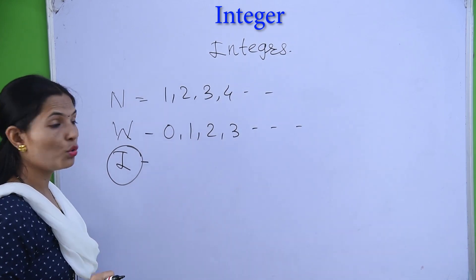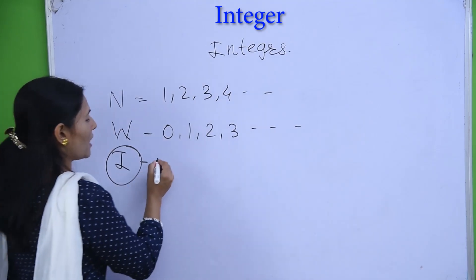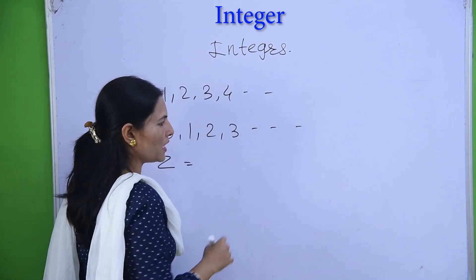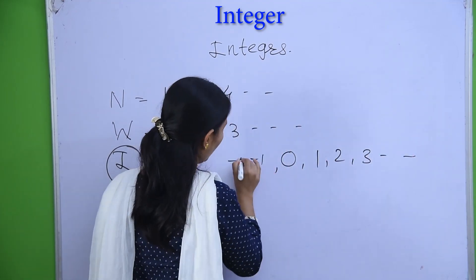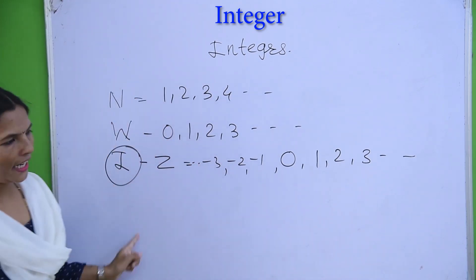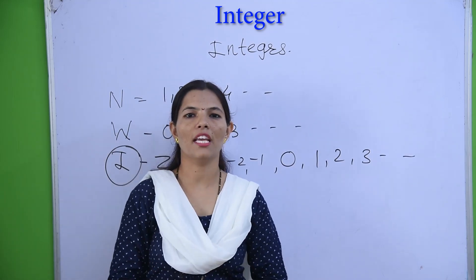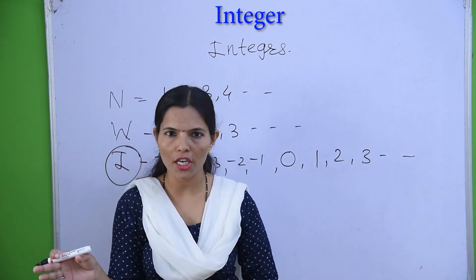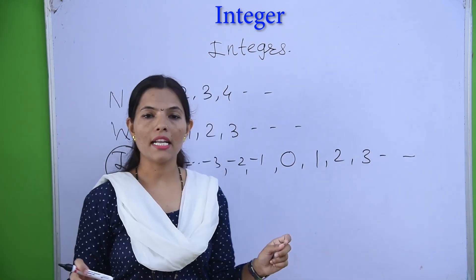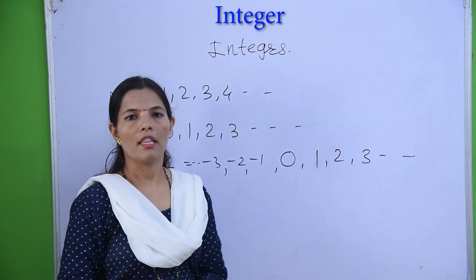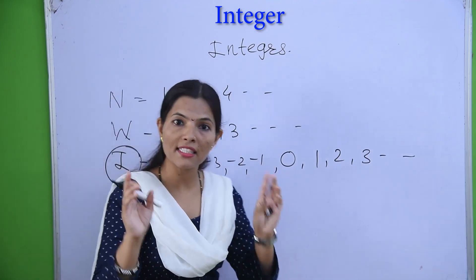And then integers — I told you to write in the comment box how you show integers. Integers are shown by Z. Integers means 0, positive numbers, and negative numbers. In today's lecture we study the origin — what is meant by origin, that is the central point of the number line, the point on the number line which represents 0.